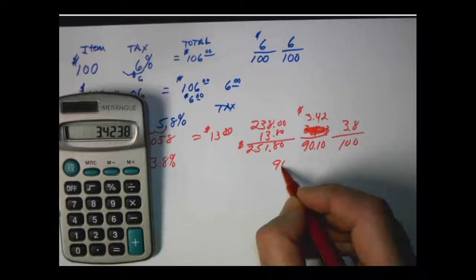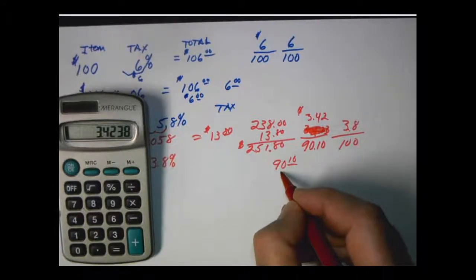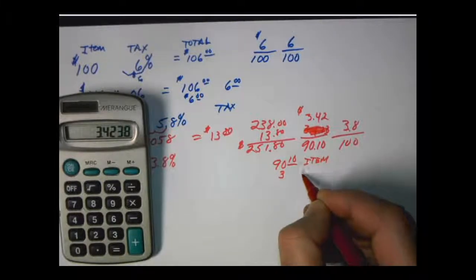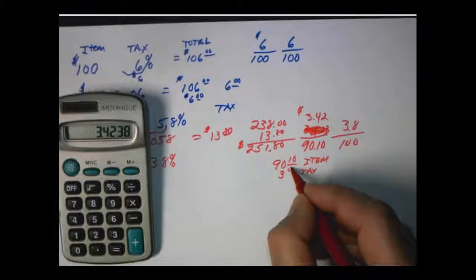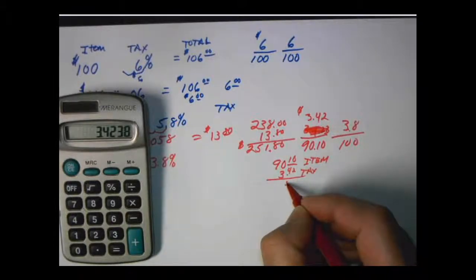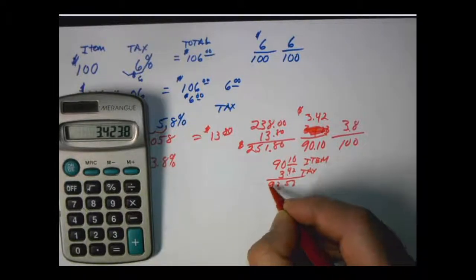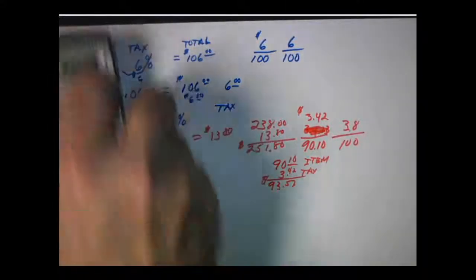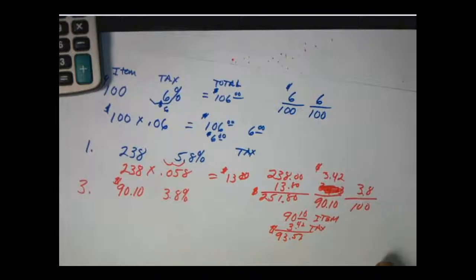So we cross multiply divide. There's our amount of our tax. Then we have to add it to the item. So that was the tax. This is the item. This is the tax. And then we need to add it up. So that's how to do all of those.